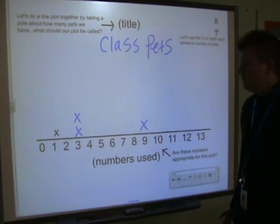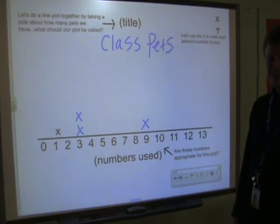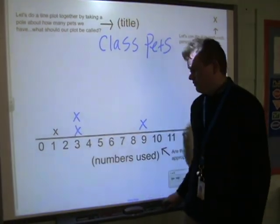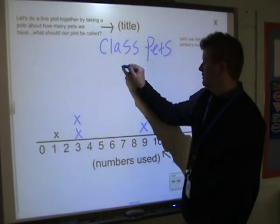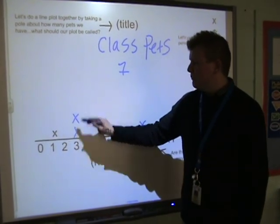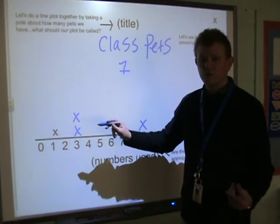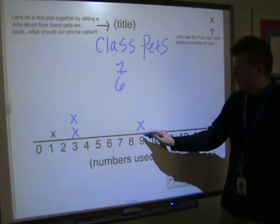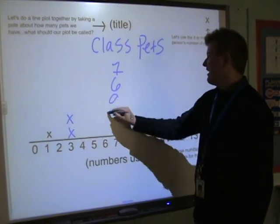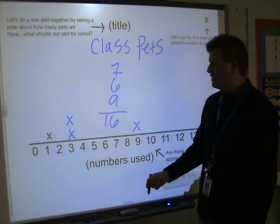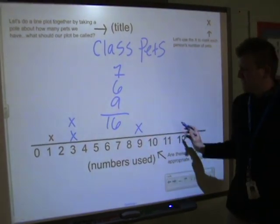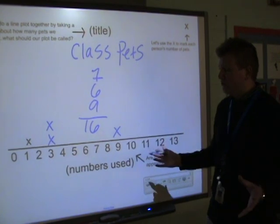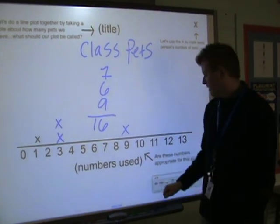Looking at this line plot, it tells me a lot of information — it's just some numbers and some X's, but there's a lot there. I know that one person in the class has one pet. I know that there are two people — because there's two X's — that have three pets. And I know that one person has nine pets. So if you asked how many pets does the whole class have altogether: one, plus three plus three is six, plus nine — this line plot tells me there are 16 pets between all the kids and the teacher in the class.